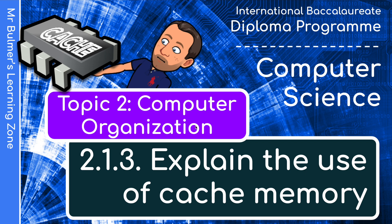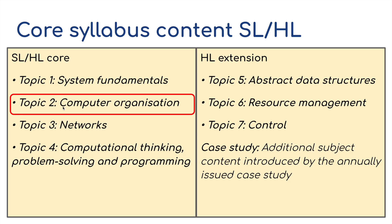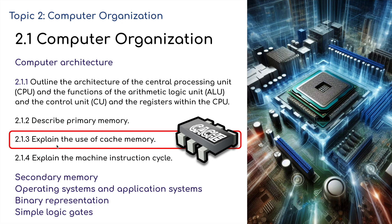Hello and welcome back to video three for topic two, computer organization. Here we're going to be explaining the use of cache memory. This is for the IB Diploma in Computer Science. Topic two is part of the four core units, and we're almost at the end of this first section on computer architecture.